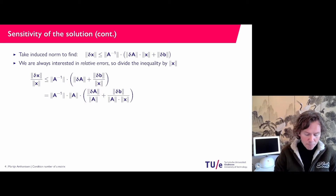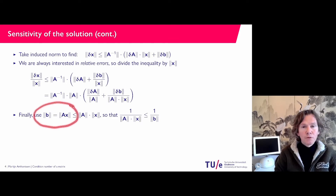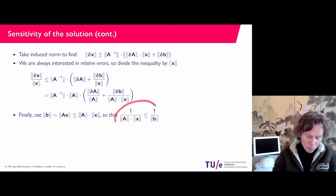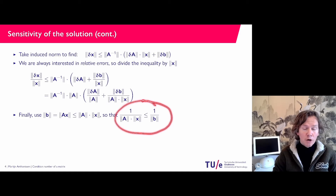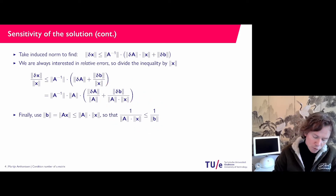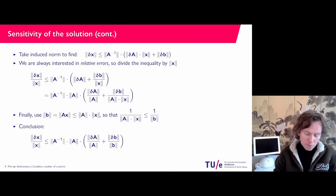The norm of A inverse times the norm of A gives the relative error in the solution from the matrix term. The other term is still a bit ugly, but we can improve it. I know that B equals Ax, so the norm of B is the norm of Ax, and I can use the matrix norm inequality. Writing it the other way around, apparently one over the norm of A times the norm of x is less than or equal to one over the norm of B. So in the remaining term I can replace the denominator using this inequality. What we find is a clean inequality — let's look at it more closely on the next slide.